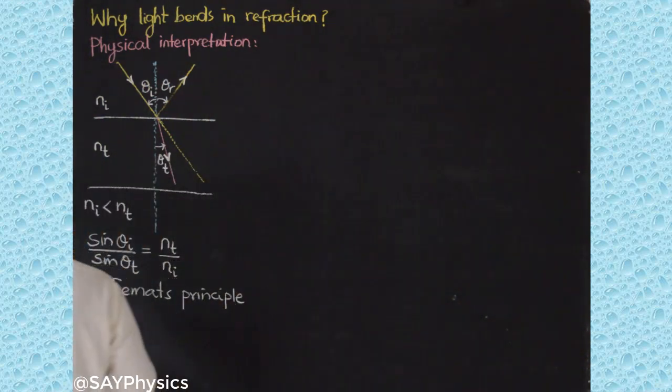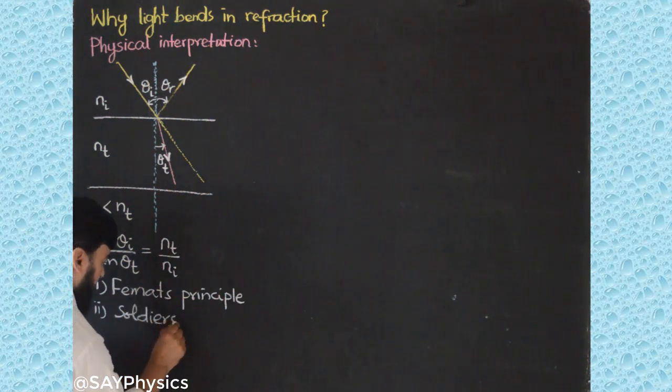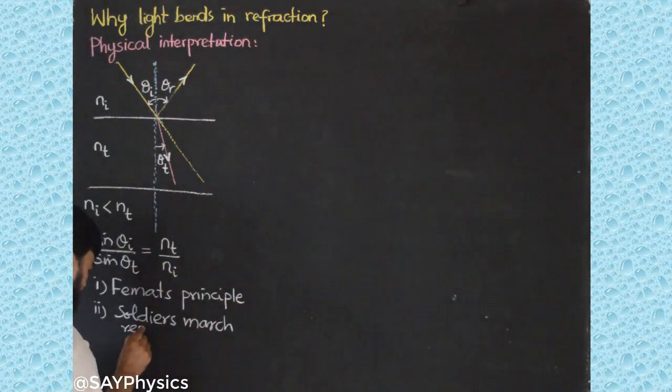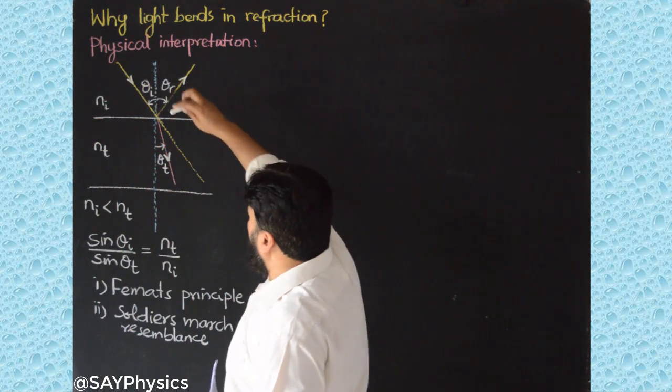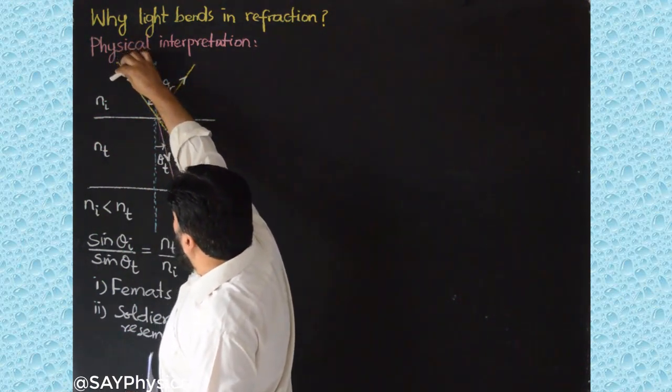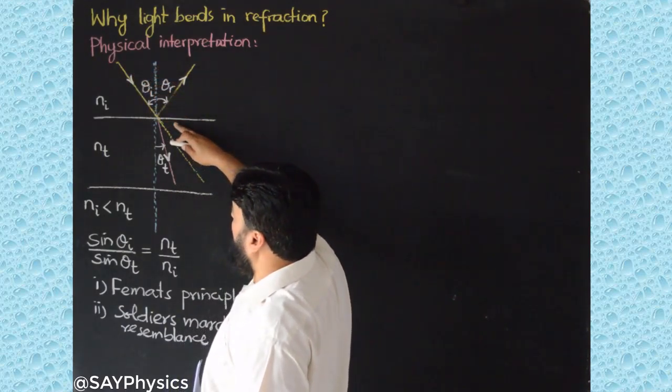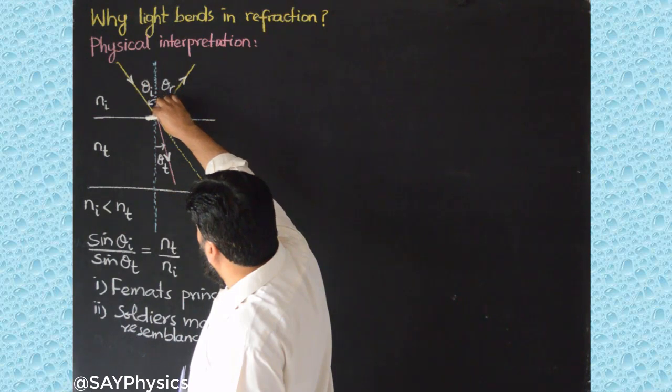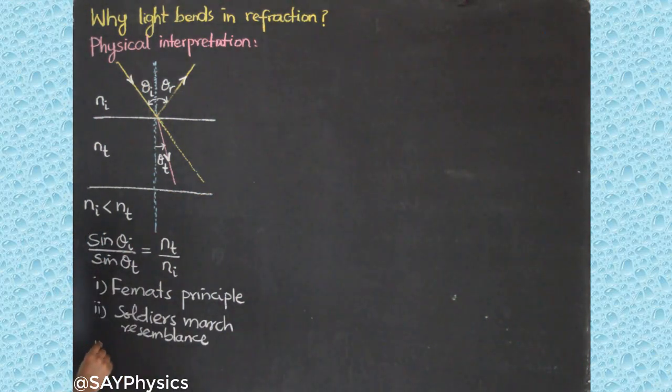Fermat's Principle is one of the explanations. Another very prominent explanation for this one is the soldiers' march resemblance. You can see the details on the internet that this one is like marching soldiers. They are coming in and if they experience a dense medium, for example the soldiers experience some mud, then they will keep their distance and they will bend and will go like this.